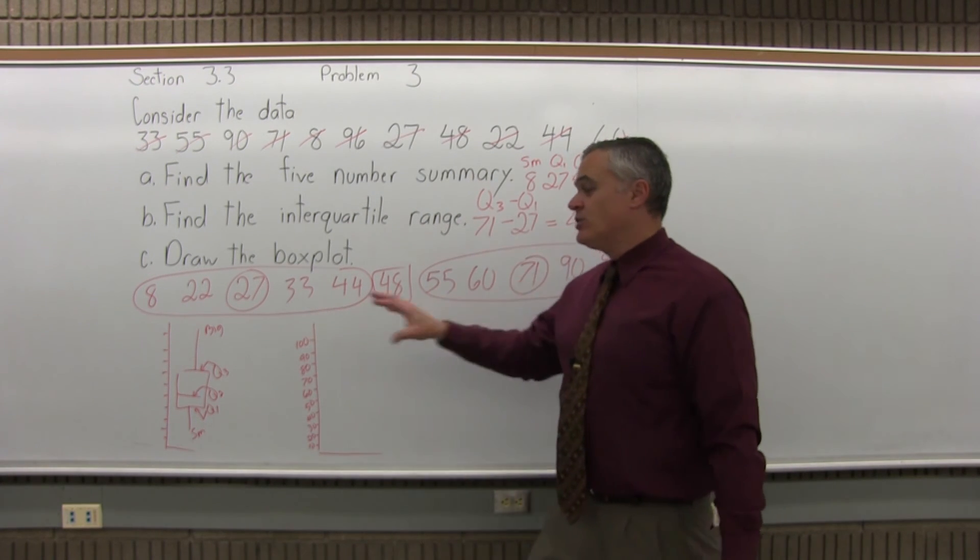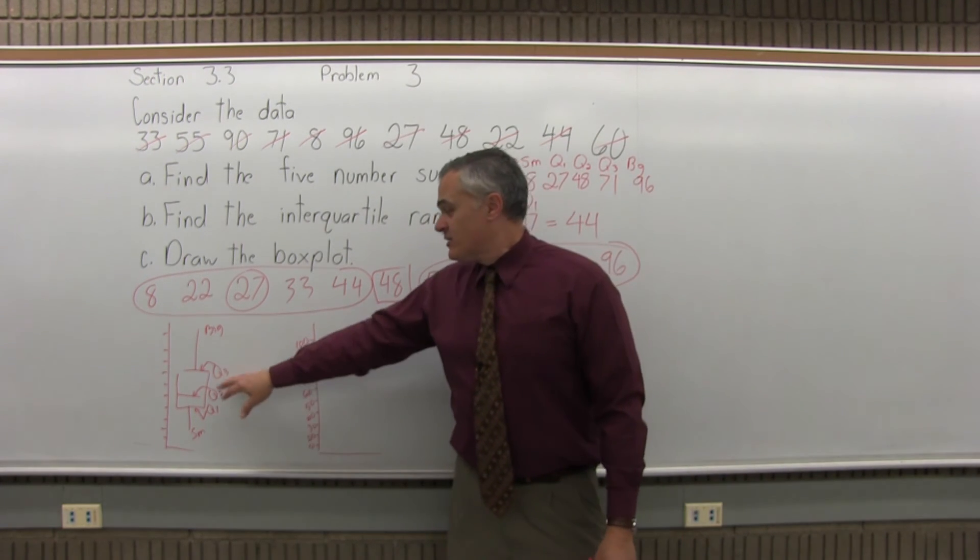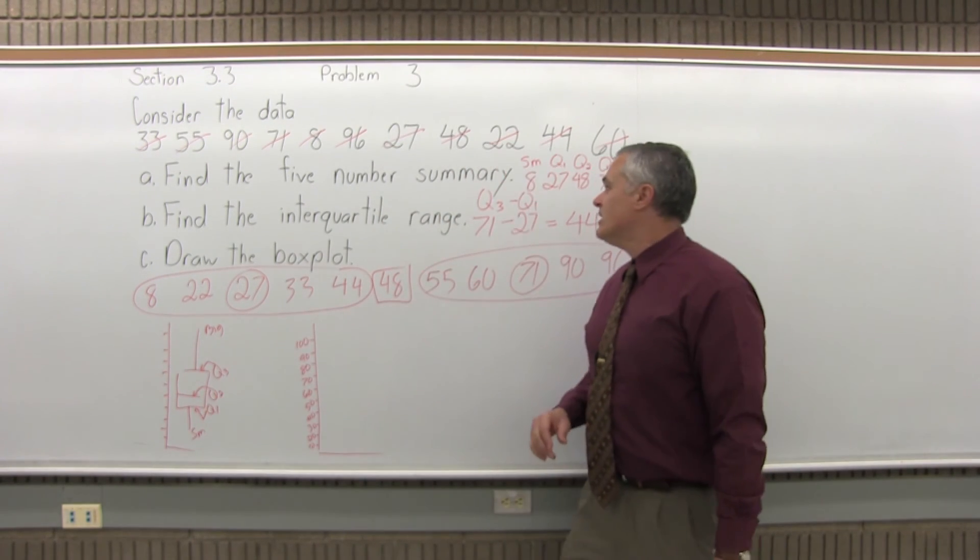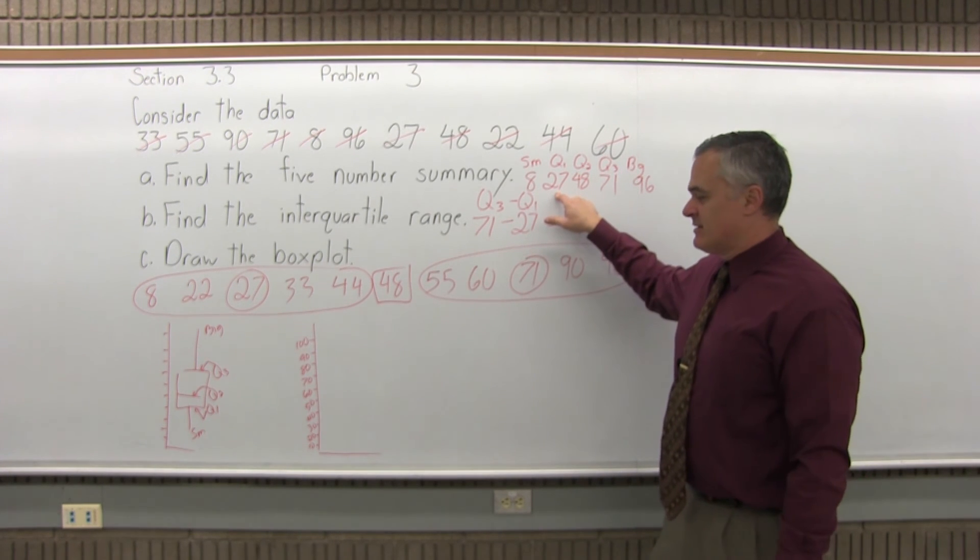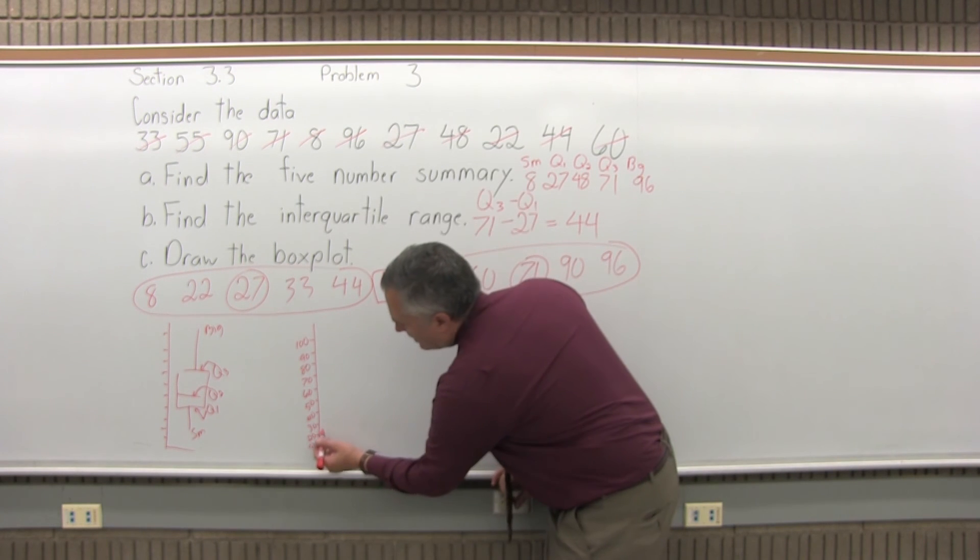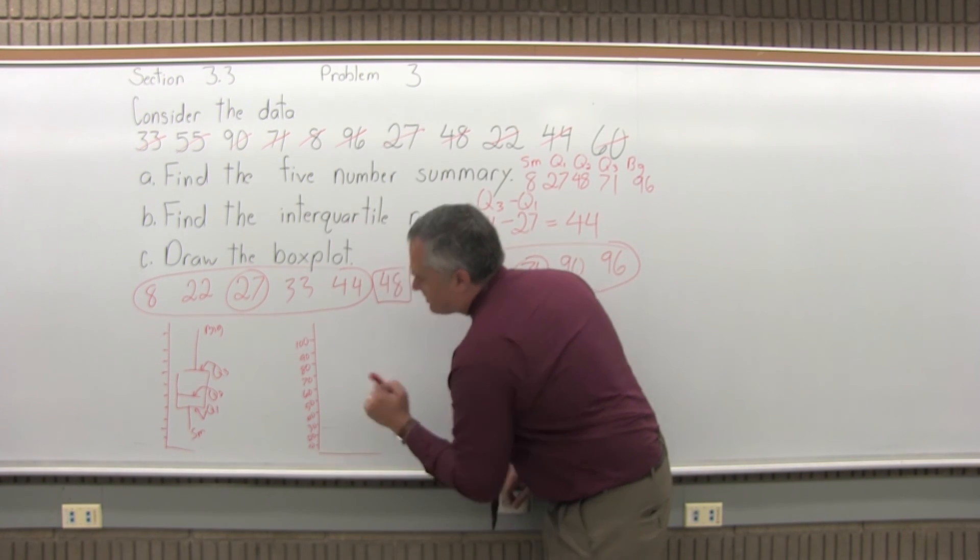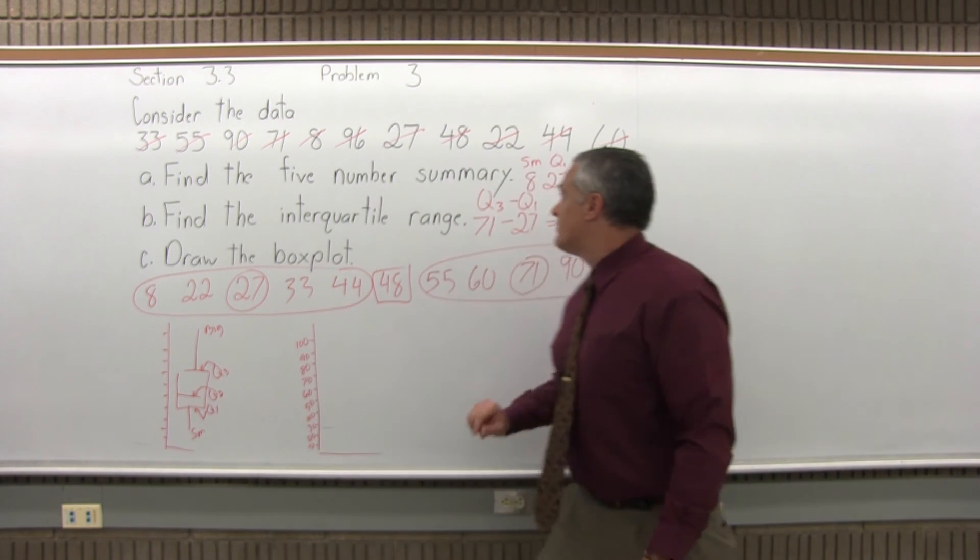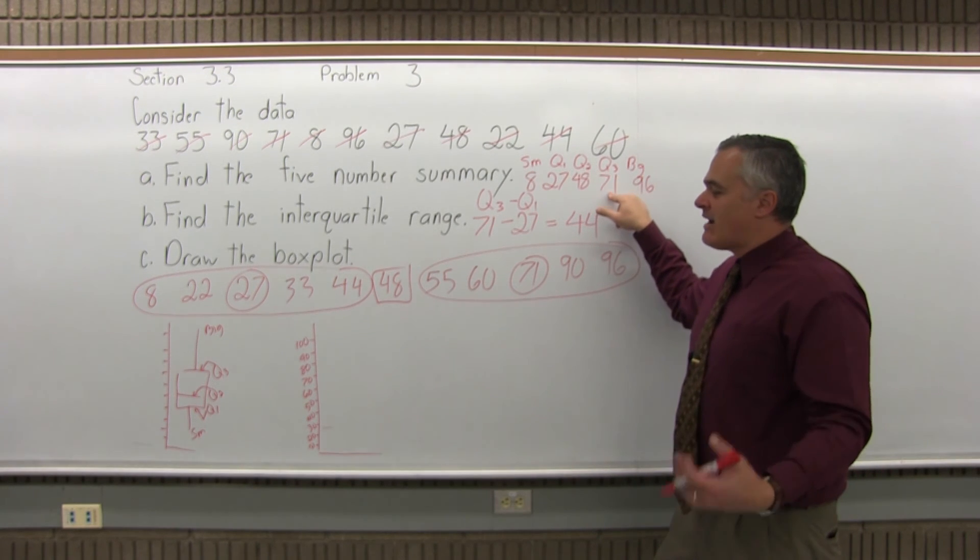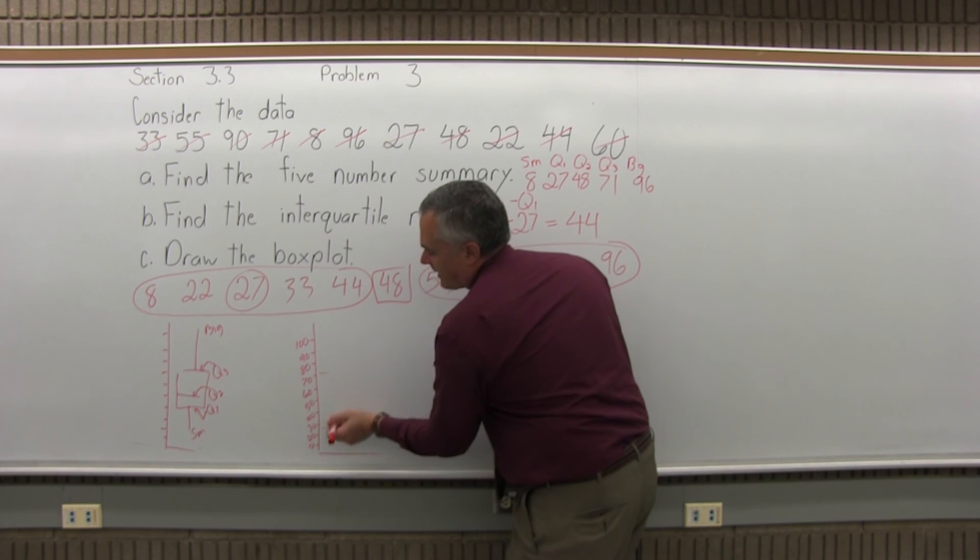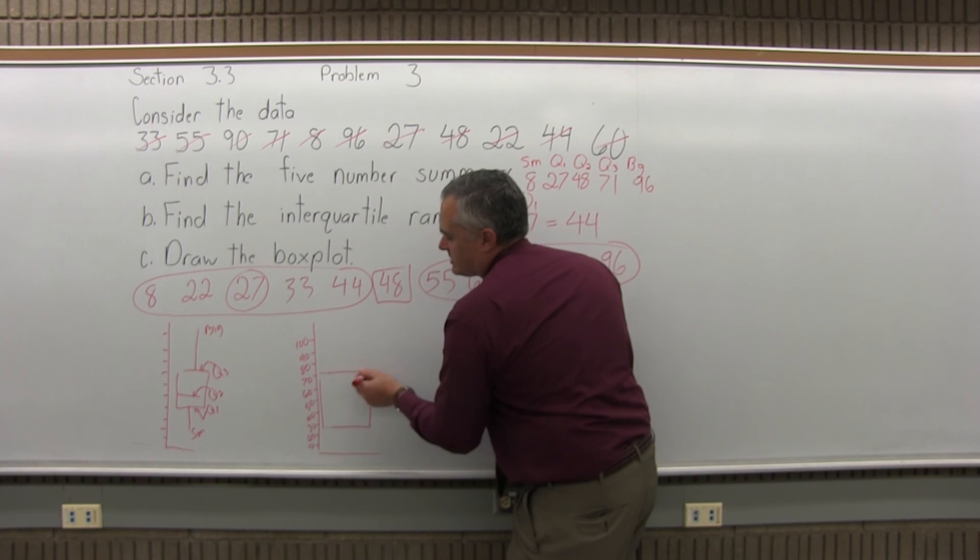So you can draw it in whatever order you want. I like to draw the top and bottom of the box first. Q1 is the bottom edge of the box, which is 27. I don't have 27 exactly on my number scale, so I'll find the 30 and go a little bit lower. That'll be the bottom of the box. Q3 is the top edge of the box, which is 71. I'll find 70 and go a tiny bit higher. I'll connect those and make the box wide enough.